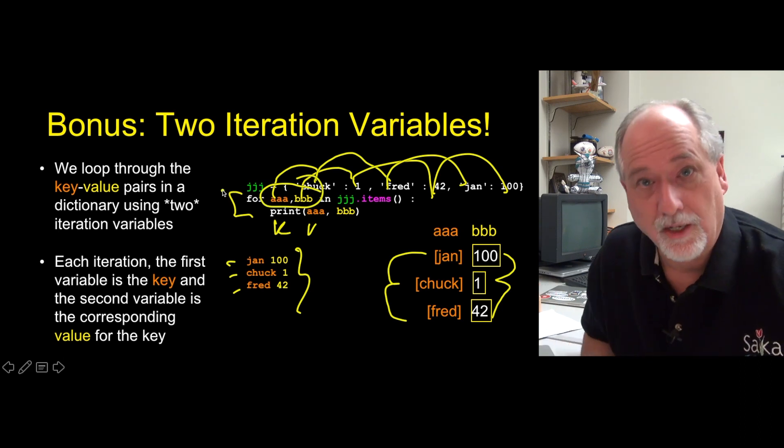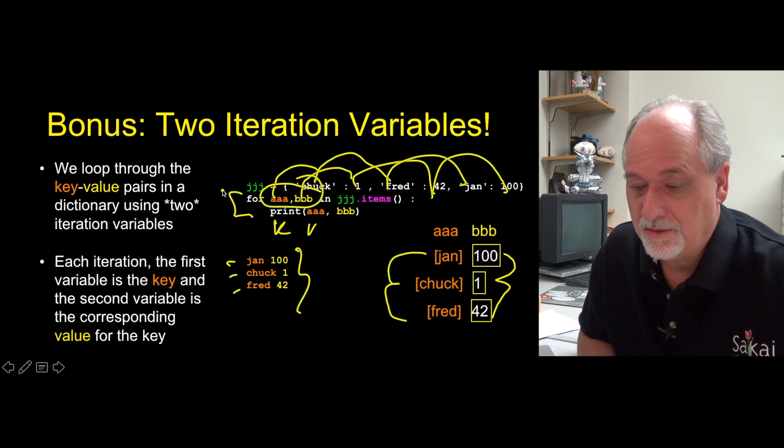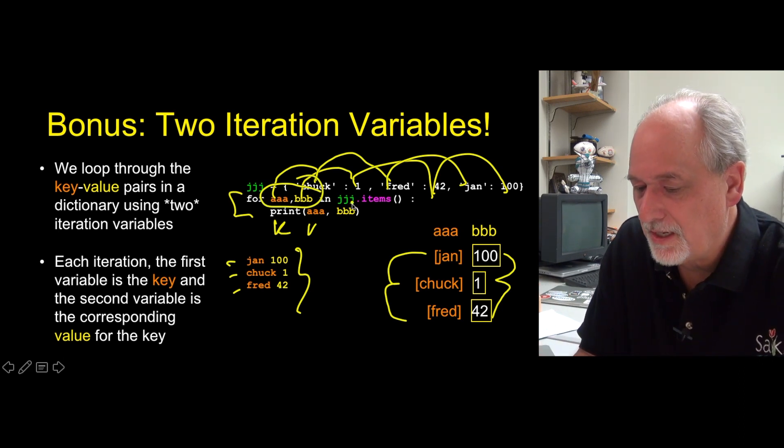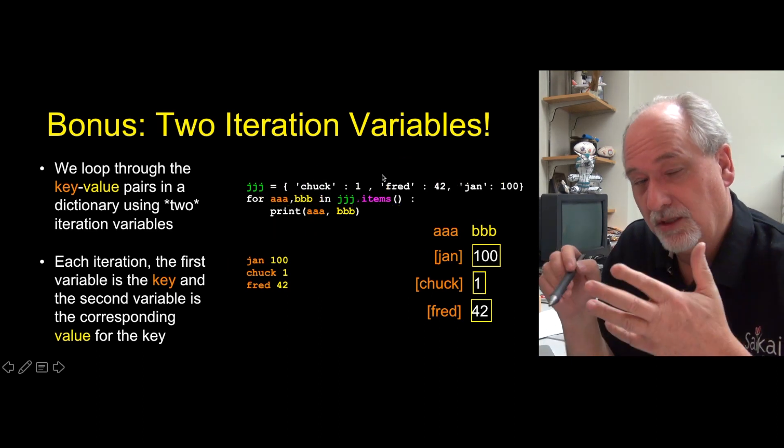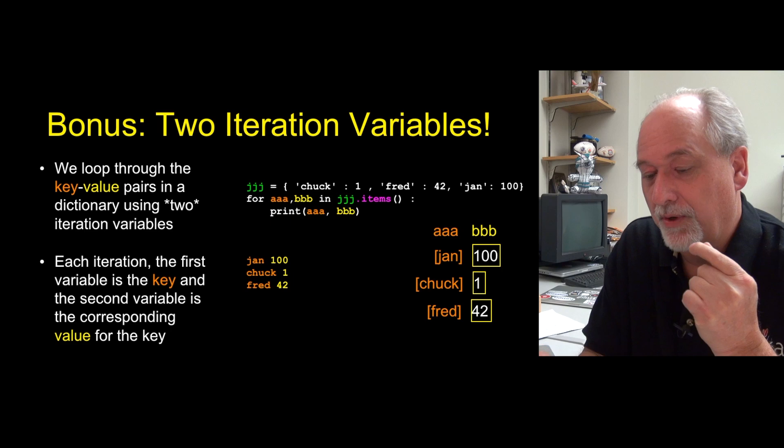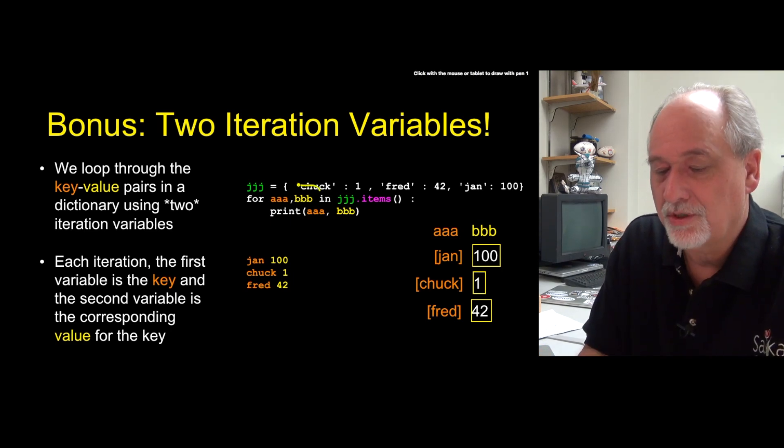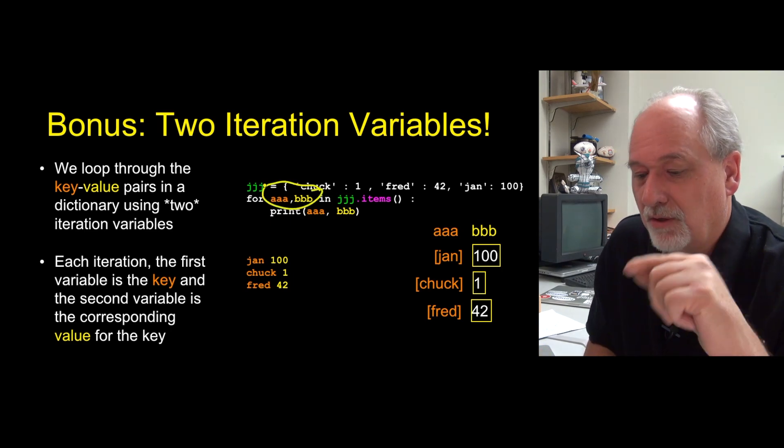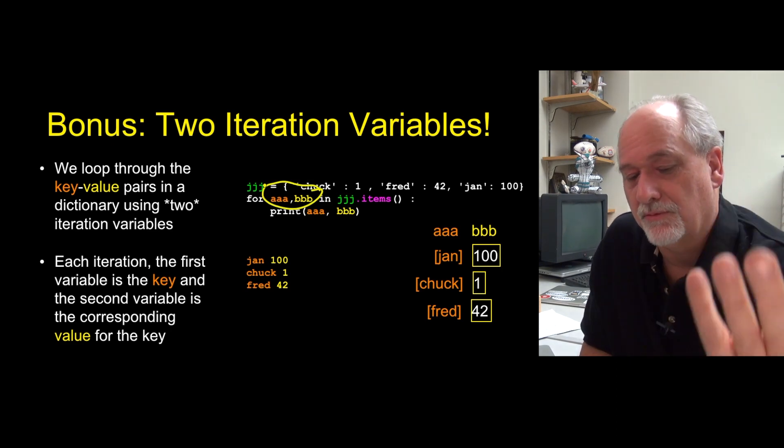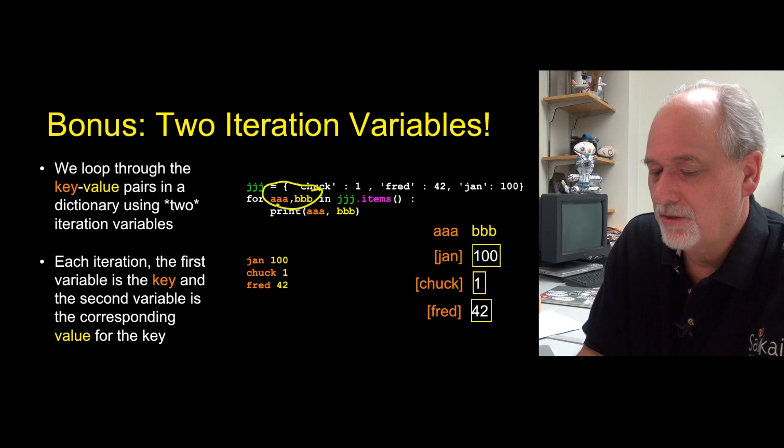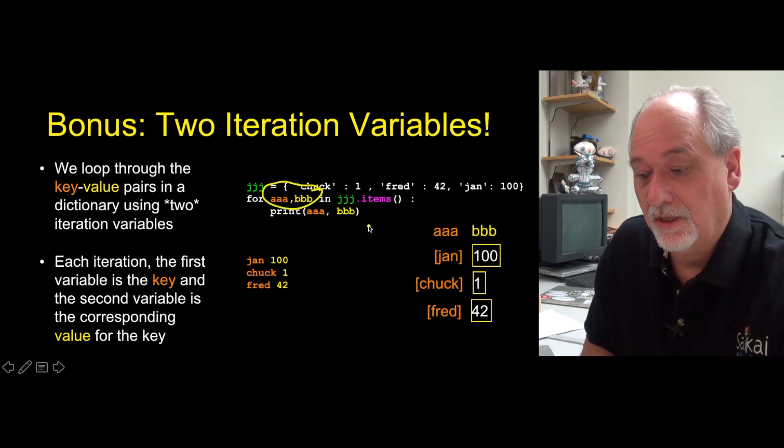The syntax is a little sort of disquieting when you first see it. But it's a super elegant thing and you just have to say items. If you don't say items you just get the keys. If you say items you get the key value pairs. And you have to have two iteration variables. If you don't have two iteration variables and use items it'll complain and say what are you doing? I'm giving you two things and you don't have two variables to receive them. So two iteration variables and items are basically related.